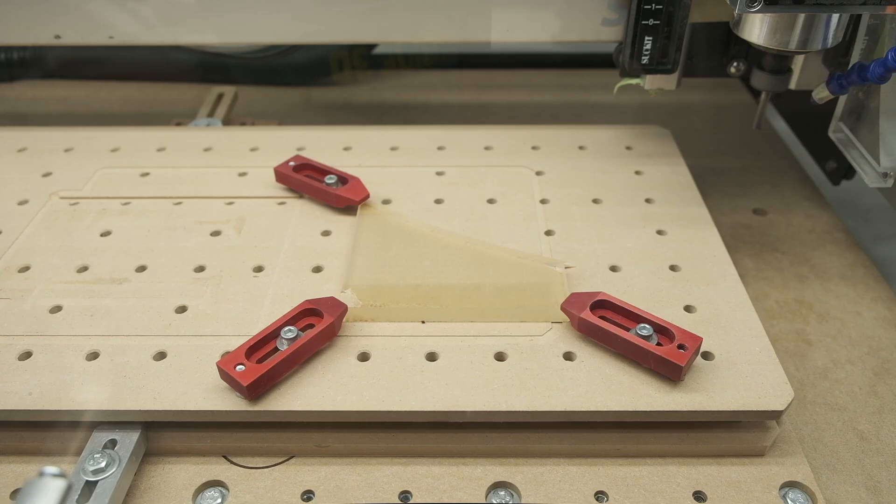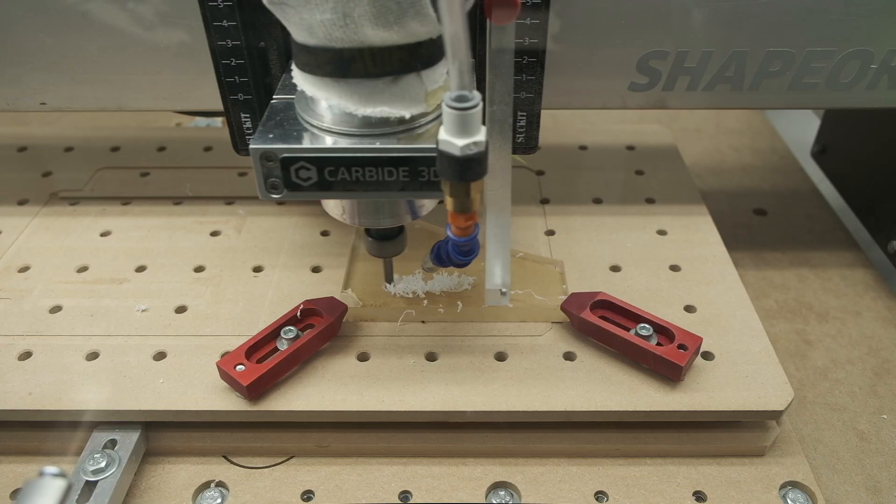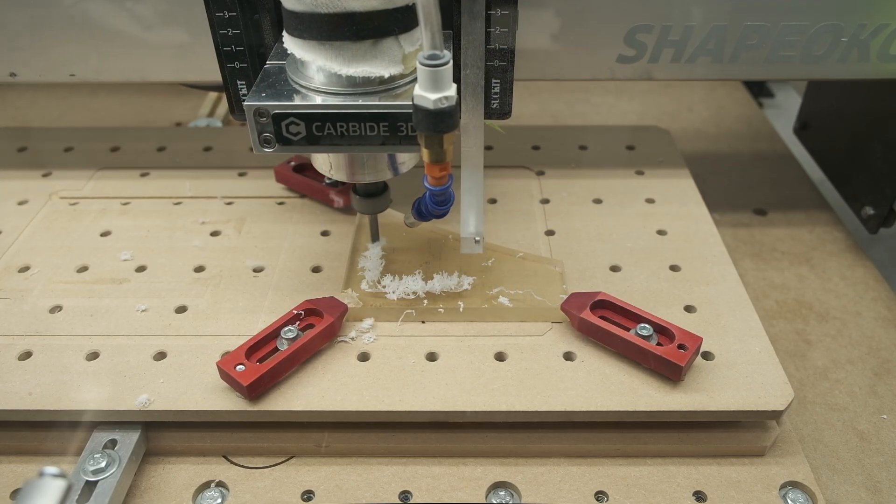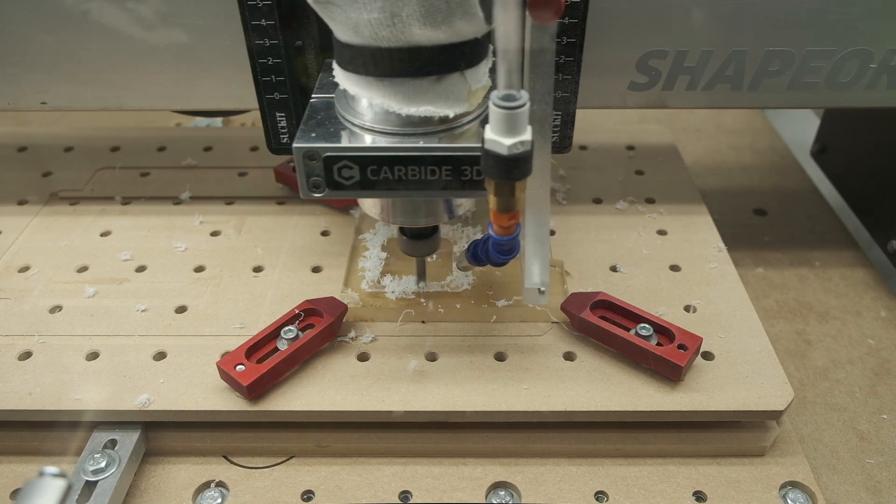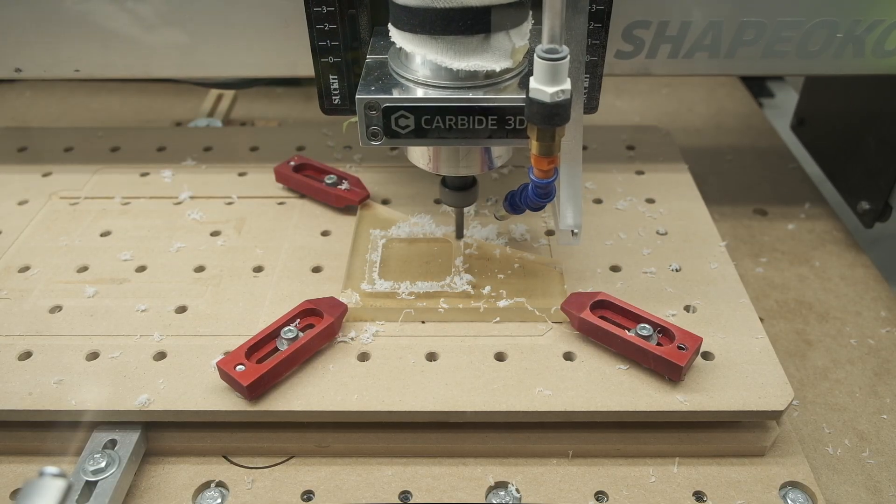By and large, you can use the exact same settings on either machine at 10,000 RPM, but two things on the Shapeoko allow us to go significantly faster in acrylic: speed and power. More RPM and more torque lets us take more aggressive cuts on the Shapeoko, and this is what that looks like.